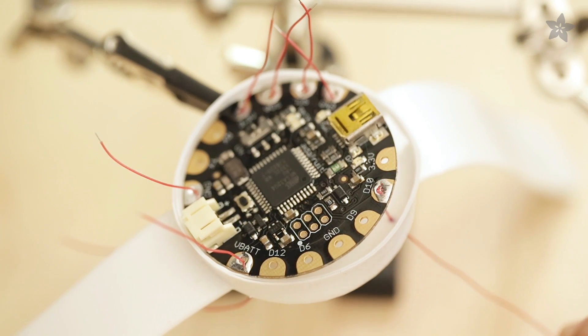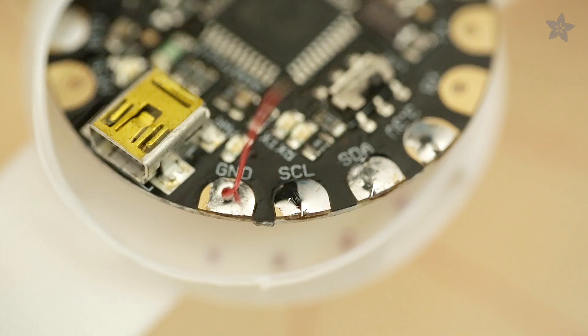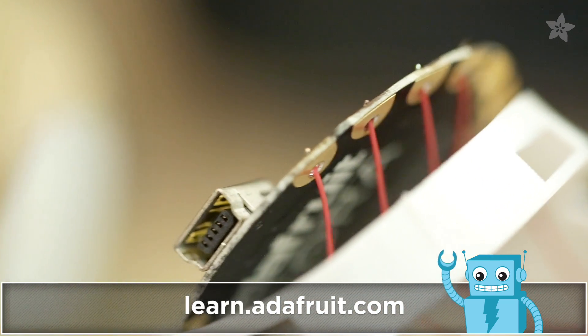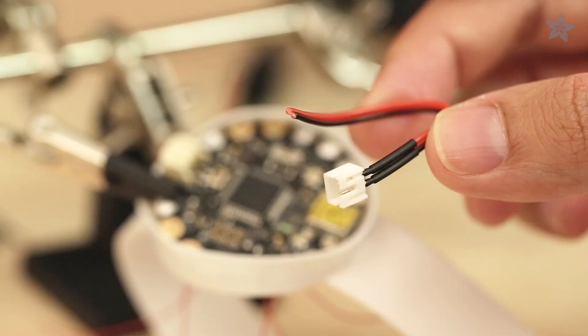Pull the wires through to the edge of the pad and bend over the end to secure the connection while soldering. A complete circuit diagram and tutorial for this project can be found on the Adafruit learning system.